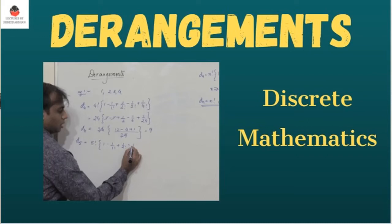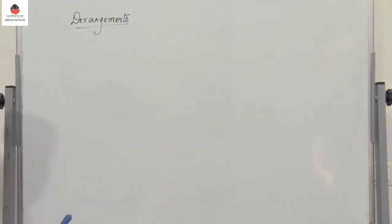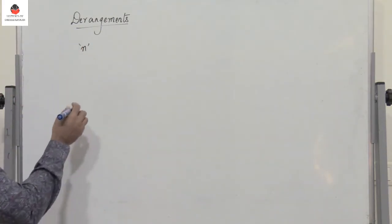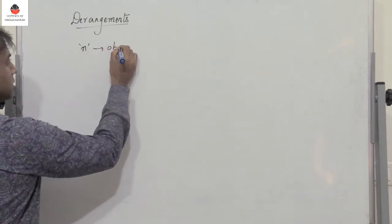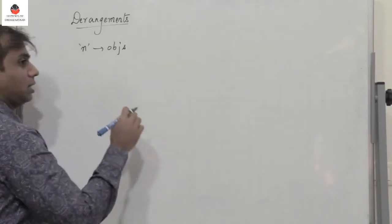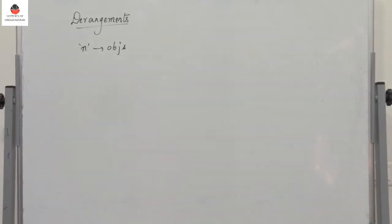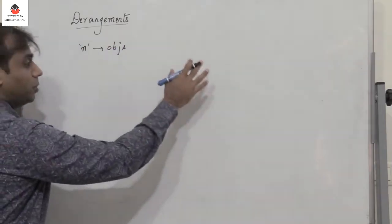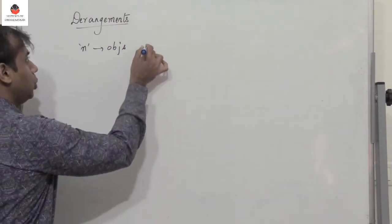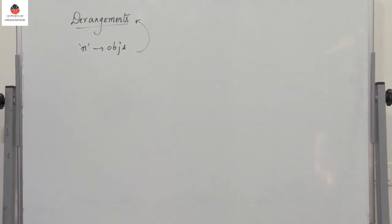What are derangements? It's a very interesting topic. Let us consider a set of n distinct objects. If these objects have to be placed in such a way that they do not occupy their natural or original positions, then the set of permutations possible will give rise to the number of derangements.